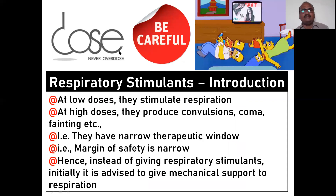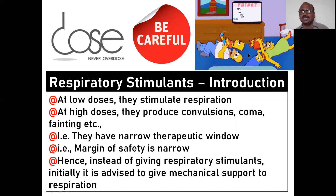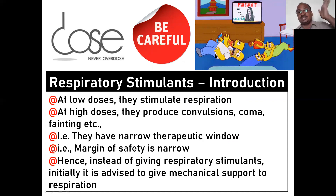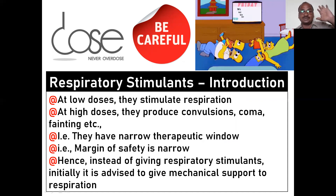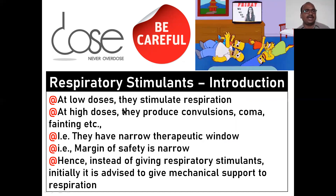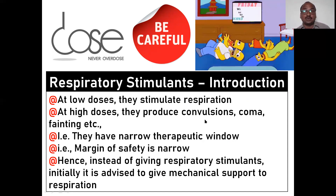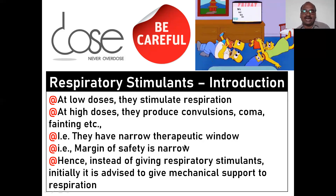Be careful whenever you are choosing a dose — never give an overdose. If you give an overdose, it stimulates the central nervous system and leads to epilepsy. That's why these must be handled very carefully. At low doses they stimulate respiration; at high doses they produce convulsions, coma. They have a narrow therapeutic window — a small range in dose. Even 1 mg increase can be dangerous, so the margin of safety is very narrow.